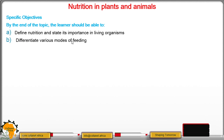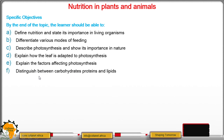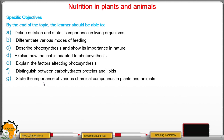You should be able to differentiate various modes of feeding, describe the process of photosynthesis and show its importance in nature, explain how the leaf is adapted to the process of photosynthesis, explain the factors affecting photosynthesis, and distinguish between carbohydrates, proteins, and lipids, stating the importance of various chemical compounds in plants and animals.